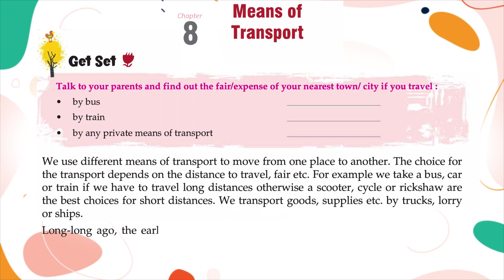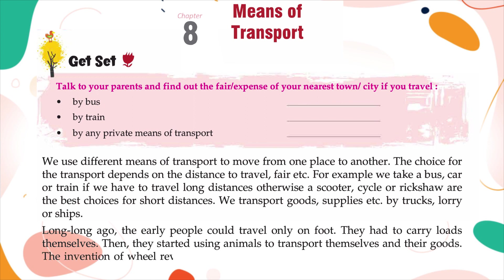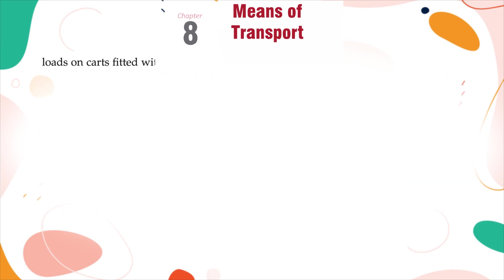Long, long ago, the early people could travel only on foot. They had to carry loads themselves. Then they started using animals to transport themselves and their goods. The invention of the wheel revolutionized transport. People started moving and carrying loads on carts fitted with wheels, which were pulled by people or animals.